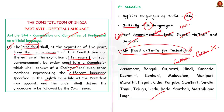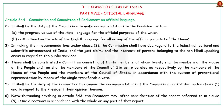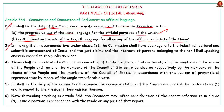The main task of the official language commission under Clause 2 is to make recommendations to the president for the progressive use of Hindi for official purposes of the Union, and also to make recommendations about restrictions on the use of English. Clause 3 says that while making recommendations, the commission should give due regard to the industrial, cultural and scientific advancement of India, and the just claims and interest of persons belonging to non-Hindi speaking areas with regard to public service.